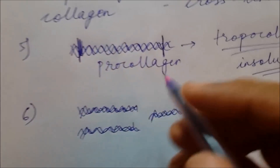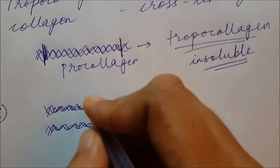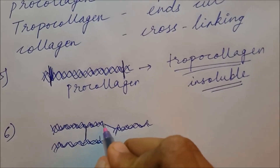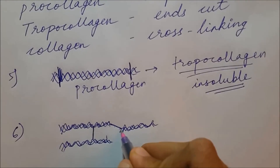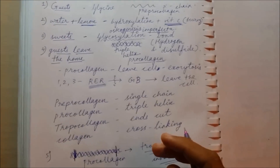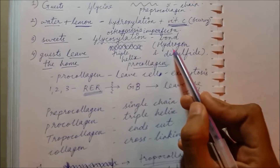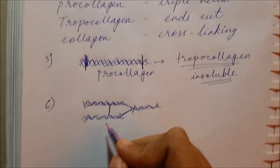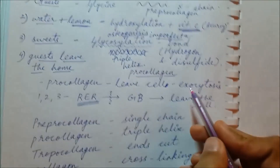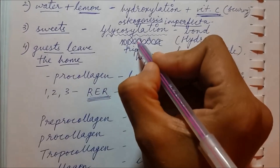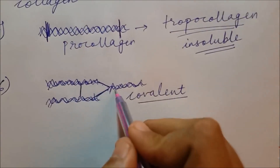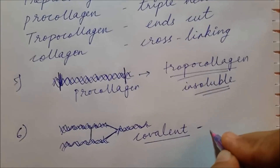In the sixth step, covalent bonds form between the tropocollagen triple helices — this is cross-linking. To summarize bond formation across all steps: hydrogen and disulfide bonds form within the triple helix during glycosylation, while covalent bonds form between triple helices in the final step. After this covalent cross-linking, the structure is called collagen.